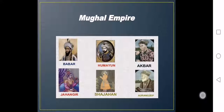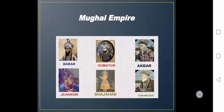We all know that in the previous chapters of history we studied about the Mughal Empire. We saw that there were 6 Mughal kings who ruled for many years and came as the greatest power in the world. The chain of Mughal rule started from Babur, as you can see in this picture, and ended with Aurangzeb, the last Mughal king. These are the 6 great Mughal kings of their time.